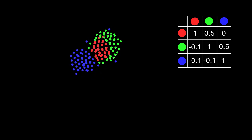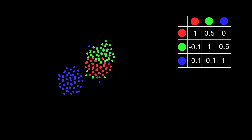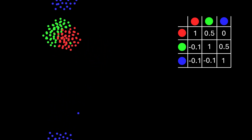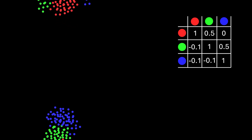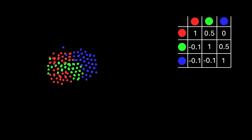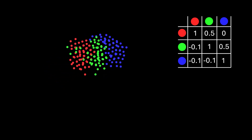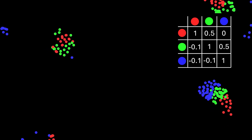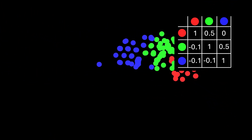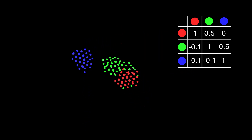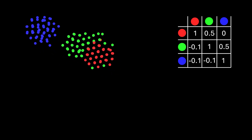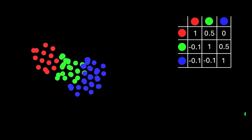Green particles are slightly repulsed by reds and attracted to blues, while blues don't like anyone — being slightly repulsed by both, they tend to move away from greens and reds while forming their own clumps. Greens will move away from reds but not fast enough to break the connection. The same happens with blues when greens grab hold; the blue group tries to move away but can't break the hold of the green group, which in turn can't break the hold of the red one. You get these chains of coloured groups moving across their environment.